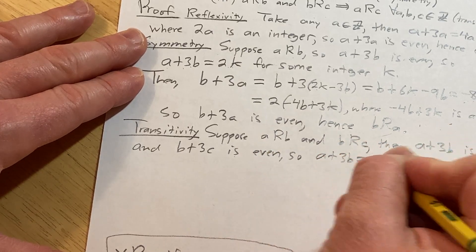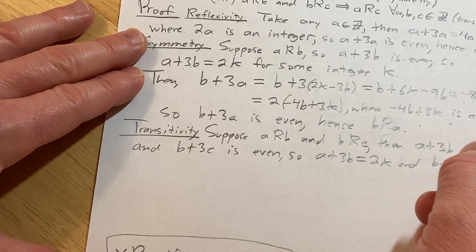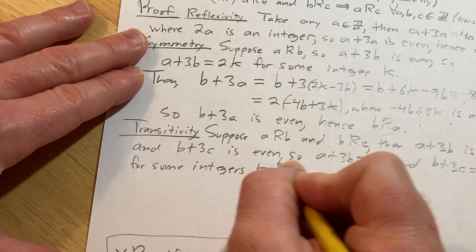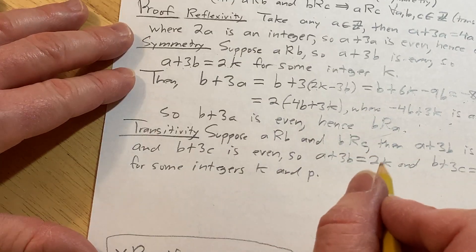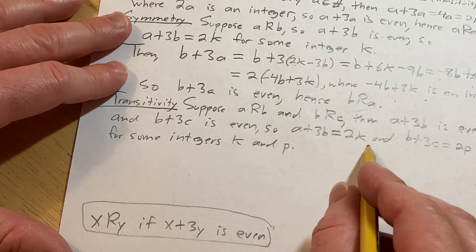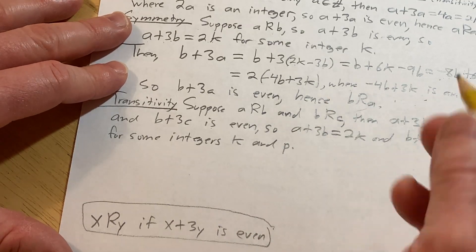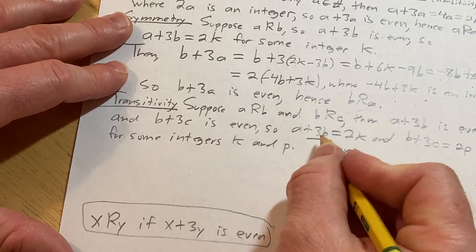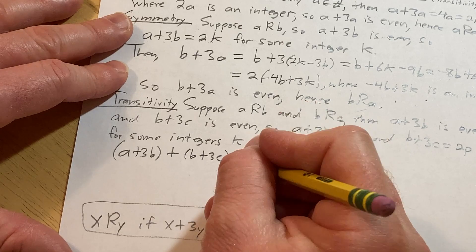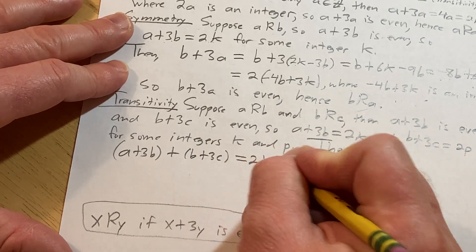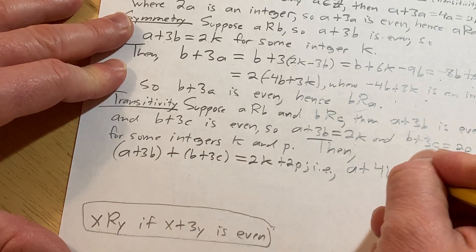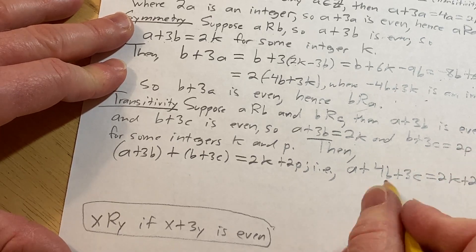So that means that a plus 3b equals 2k and b plus 3c equals 2p for some integers k and p. Now we need to show that a is related to c—we need to show that a plus 3c is even. Typically when you have something like this you can add them and stuff usually happens. So then a plus 3b plus b plus 3c is going to be 2k plus 2p. We can combine these: a plus 4b plus 3c equals 2k plus 2p. We're looking for a plus 3c because that's a related to c.